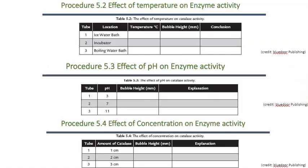In procedures 5.2 and 5.3, we're looking at the optimals for the enzyme catalase. Remember that the catalase was taken from a potato — not from an organism that maintains its own temperature, and not from human blood, which has a pH of 7.4. So temperature and pH optimals for potato catalase may be quite different from ours. In procedure 5.2, you're going to put your enzyme catalase at three different temperatures, with one at a very cool temperature, around 4 to 10 degrees Celsius.